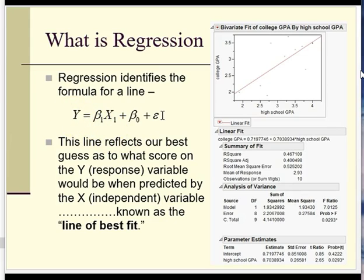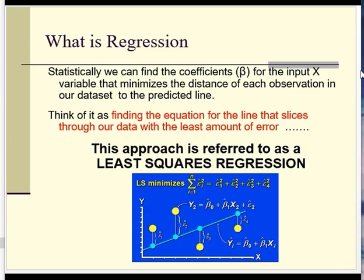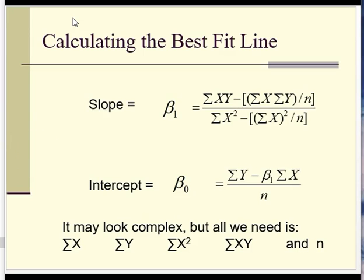We're trying to calculate the line of best fit — how we can place this line amongst all of these different observations such that the error term is as small as possible. This approach is called least squares regression because we're trying to find where to place this line to minimize these errors. We have to figure out what the intercept value (beta naught) is and what the coefficient for our independent variable is. As promised, this formula looks very similar to the correlations we went over before.